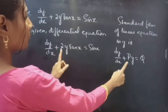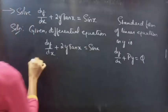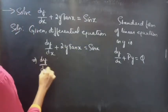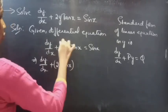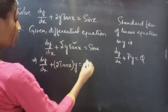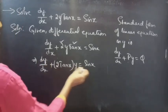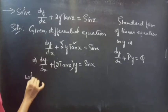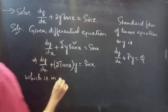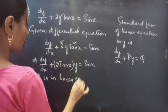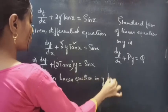By comparing these two, we get P equals 2 tan x and Q equals sin x. We can write the equation as dy/dx plus 2 tan x·y equals sin x, which is in the dy/dx plus P·y equals Q form — that is, linear equation in y form.